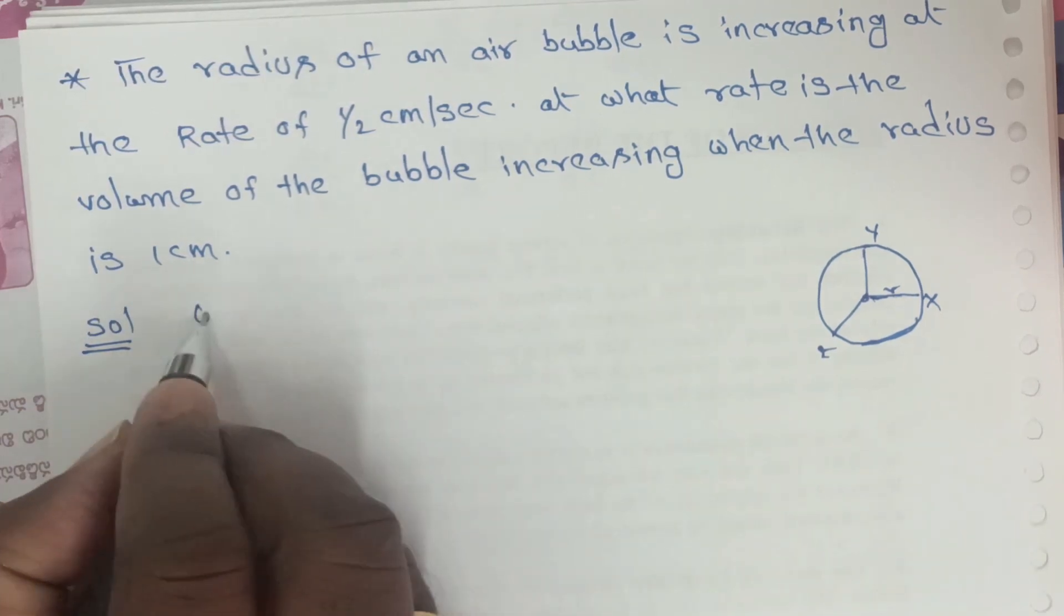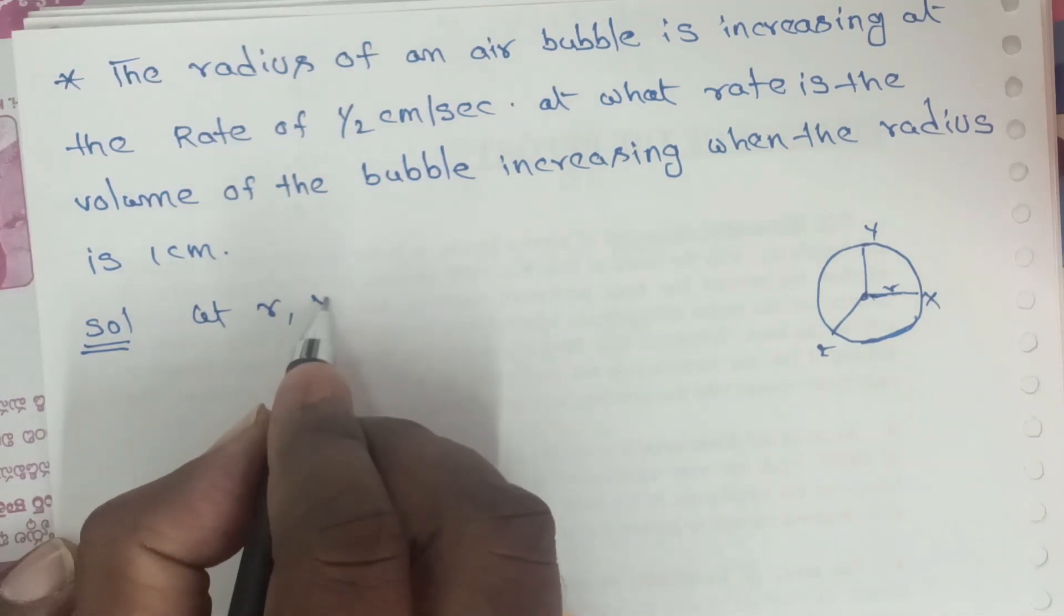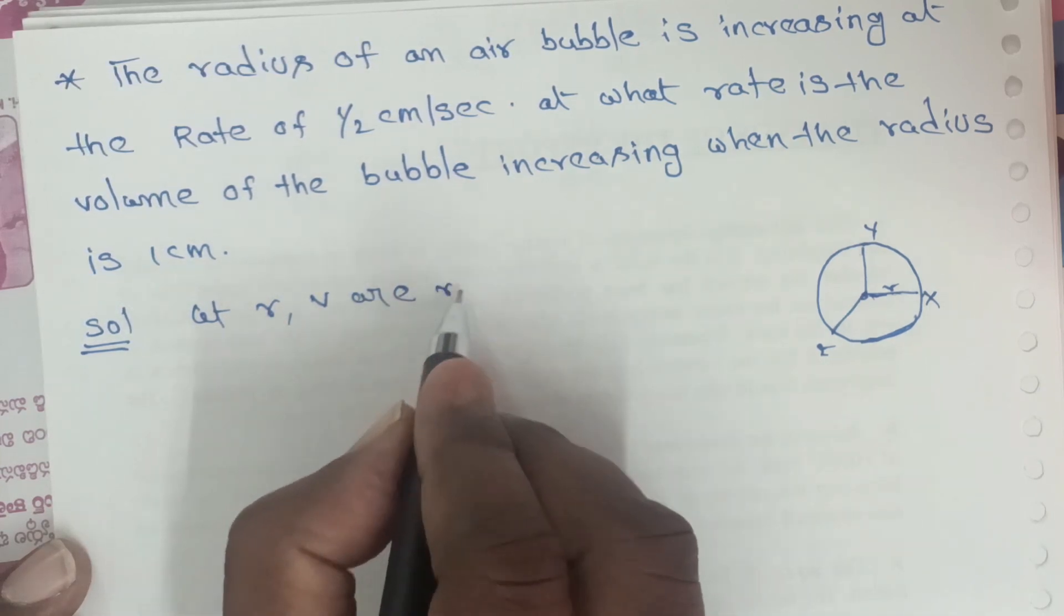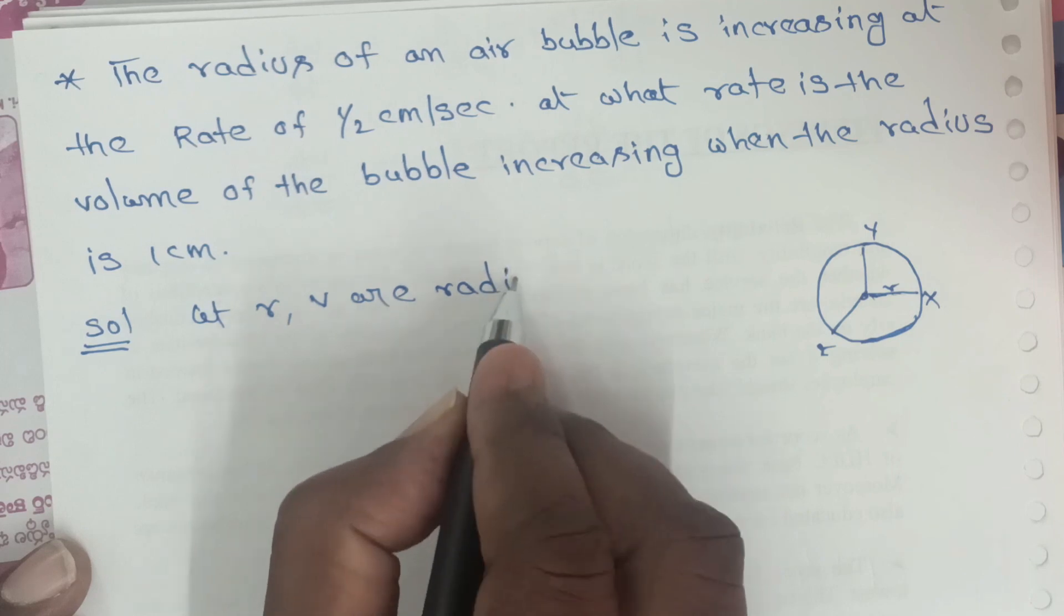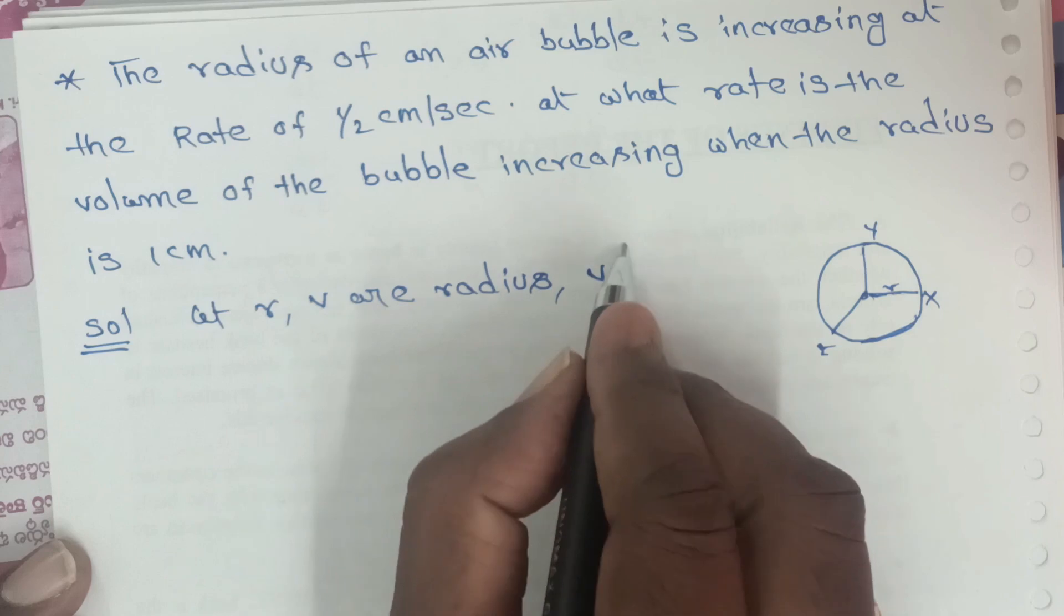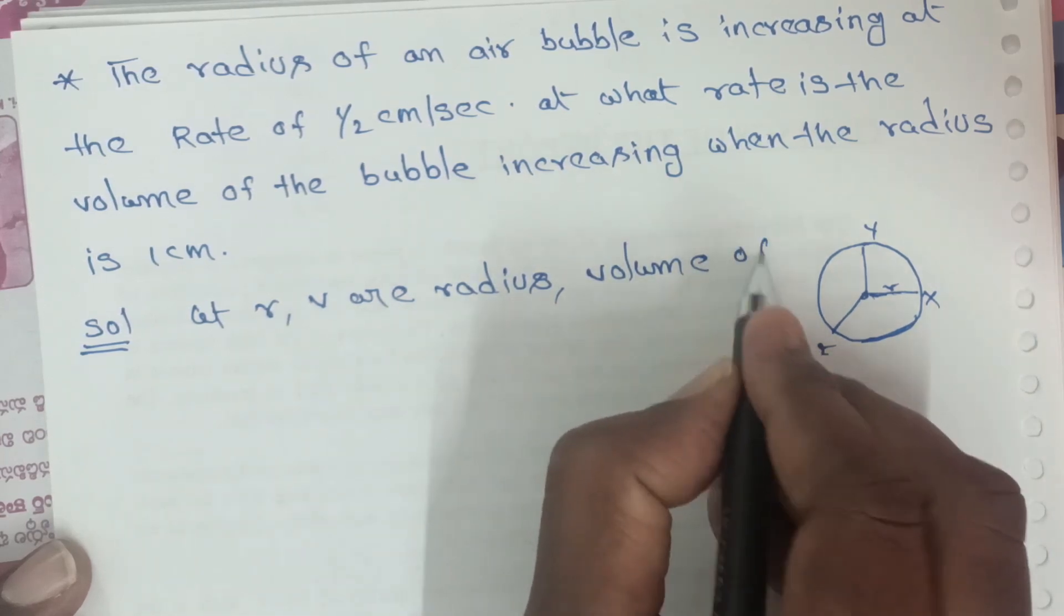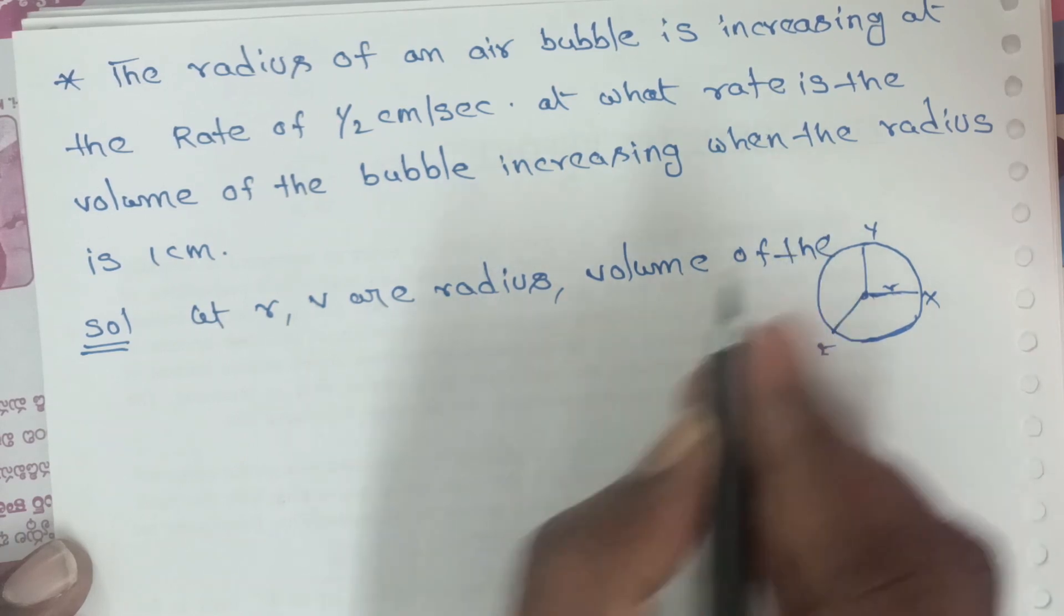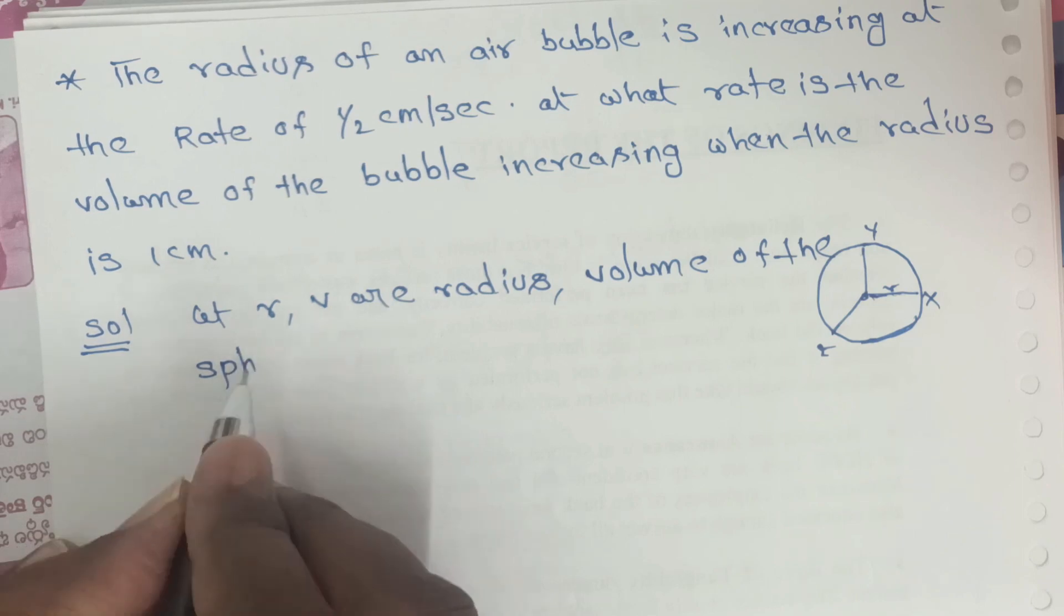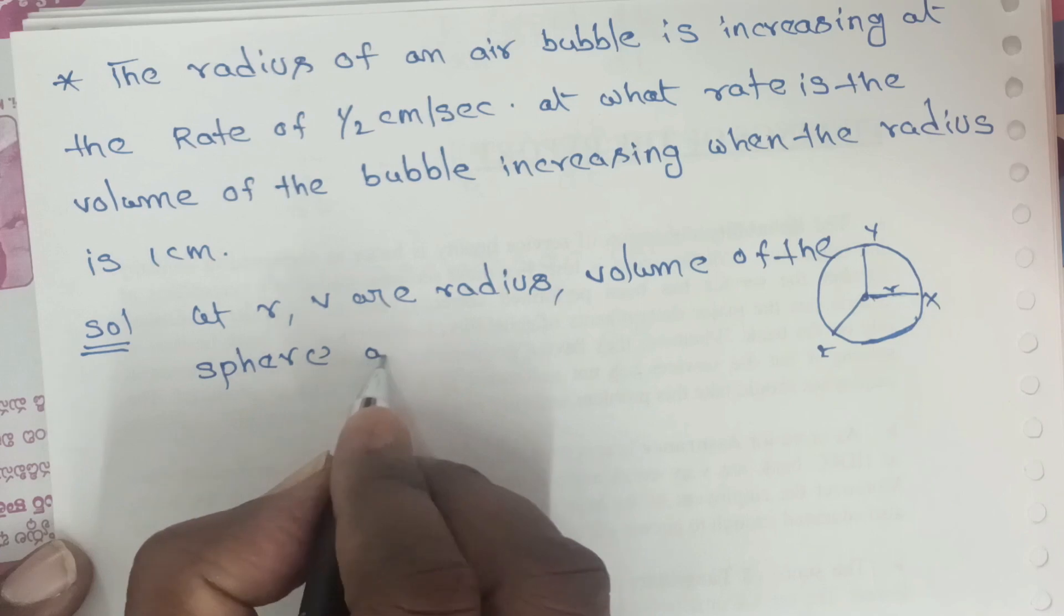Let R and V, where R means radius and V means volume of the sphere at time t.